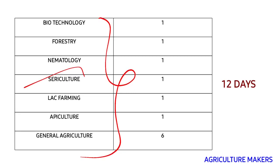Finally, coming to general agriculture, I have allocated six days — we can call it miscellaneous. You have to cover other things such as institutions, important dates, important years related to agriculture, and festivals. In those six days, cover all the miscellaneous important things that are left out from the earlier allocated time. Plan subjects according to your interest, make notes of everything for easy revision — whether you are reading books or from the internet.